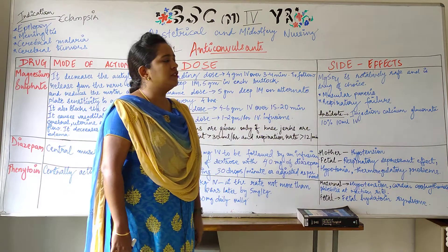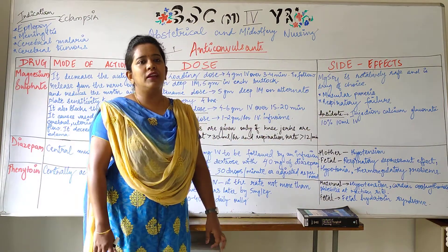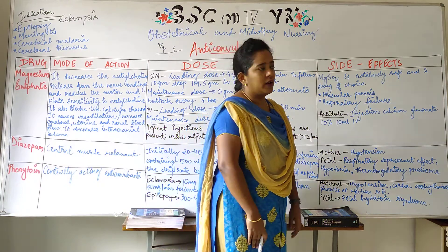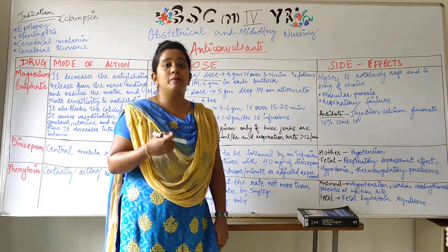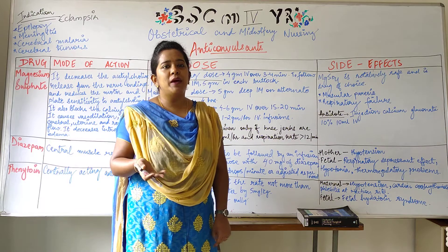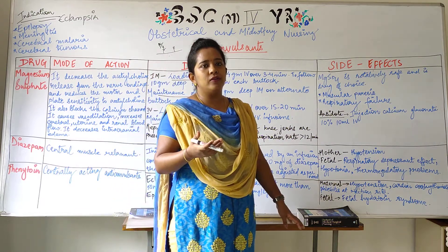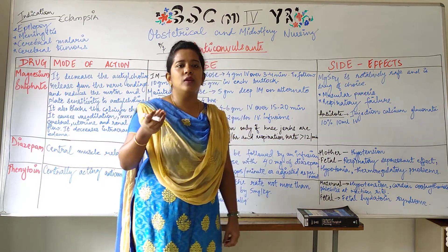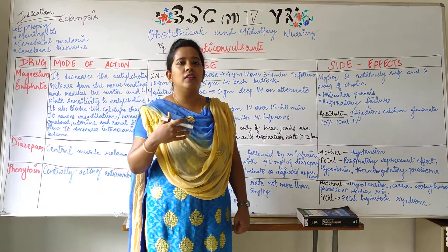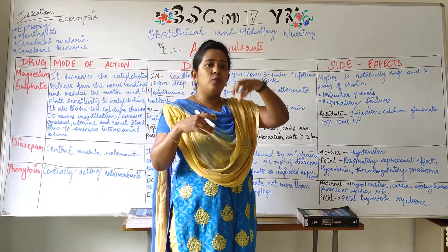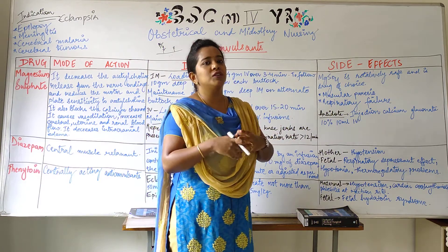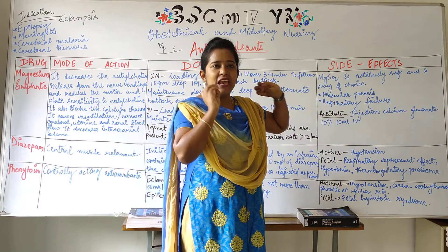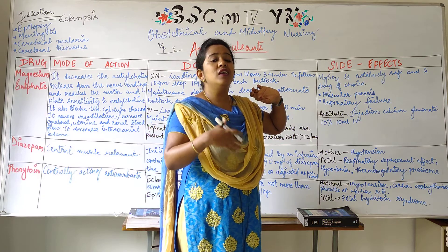Magnesium sulphate is actually a much safer and more preferable drug of choice for anti-convulsions. Still, there are chances the mother can acquire muscular paralysis or respiratory distress. High doses can block calcium channels excessively, causing muscles to stop normal contractions, leading to muscular paralysis. The mother should be observed very carefully — if she complains of numbness, tingling, or any type of paralysis, the dose should be stopped immediately. Respiratory failure can also occur due to muscular inability of the lungs to contract and expand.